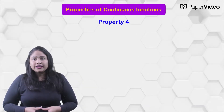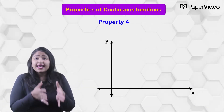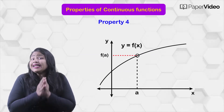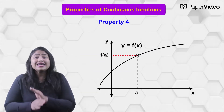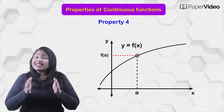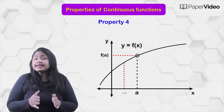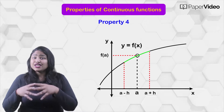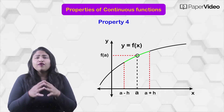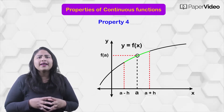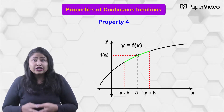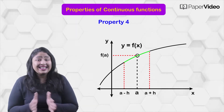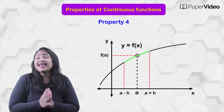According to the fourth property, if f is a function continuous at x equals to a and f of a is not equal to 0, then there exists an open interval (a minus h, a plus h) such that for all x belonging to the open interval (a minus h, a plus h), f of x has the same sign as f of a.